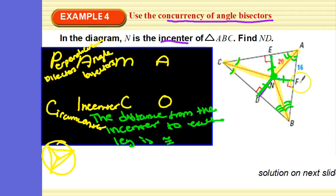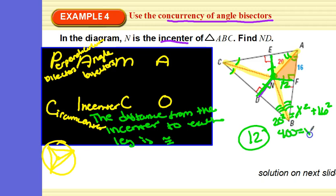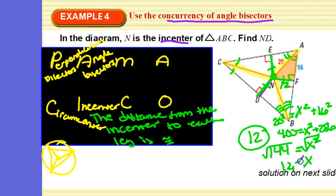They want to know the length of ND. ND is going to be the same as NF and NE. Over here we have two out of three measurements, so we can use the Pythagorean theorem. A squared plus B squared equals C squared: 16 squared plus what squared equals 20 squared? Or, notice this is a 3-4-5 special right triangle — a multiple of 4, so 3 times 4 is 12. Whether you use the Pythagorean theorem or the special triangle, the answer is 12.